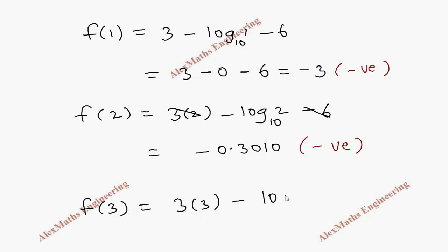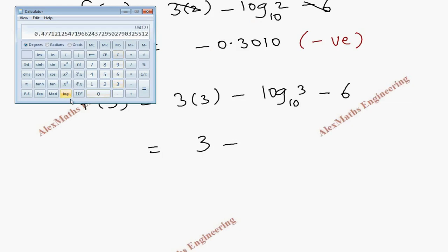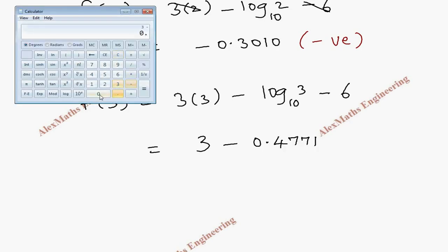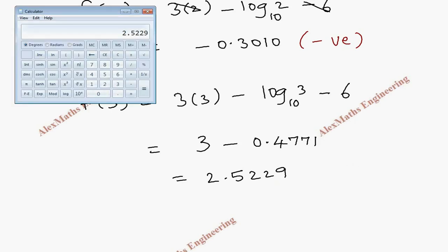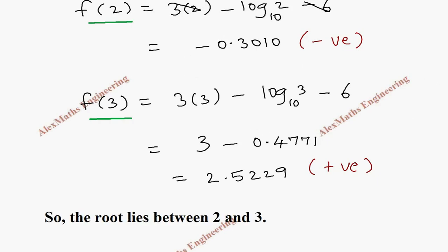f of 3 is 3 into 3 minus log 3 base 10 minus 6. So 9 minus 6 is 3, minus log 3 base 10 which is 0.4771. Subtracting: 3 minus 0.4771 gives 2.5229, a positive value. So we found the sign change — the root lies between x equals 2 and x equals 3.